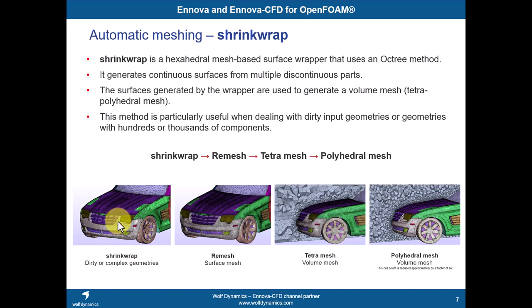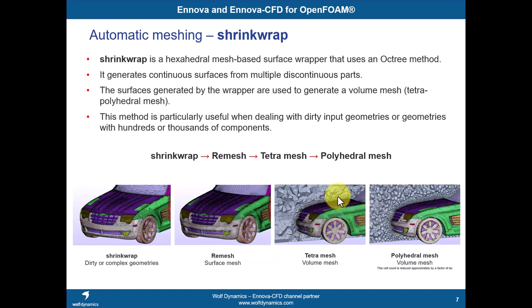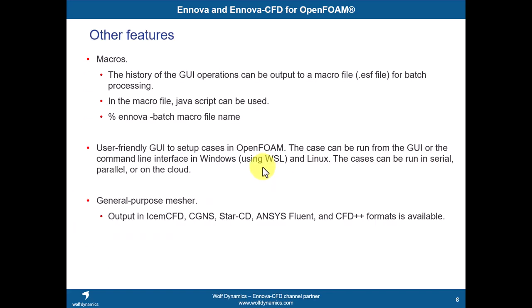There is another method — the shrink wrap method — which is the fault-tolerant approach. This is for dirty geometries. You take your dirty geometry or nasty STL files and don't want to spend time fixing them. What you do is shrink-wrap the geometry: you cover all the surface using a surface mesh that grows according to some parameters. Then you apply a remesh algorithm to smooth everything. After this good-quality surface mesh, you can grow a tetra or poly mesh and add prismatic layers. Use this for dirty geometries — if you have a clean watertight geometry, it makes no sense to use it, but you can.